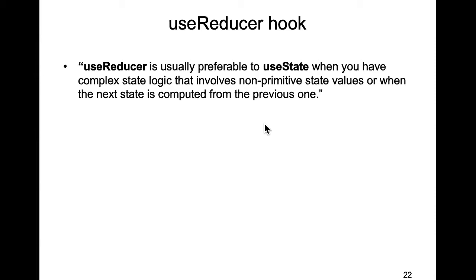But if your state, in terms of its data structure, is non-trivial, or more importantly, if the way the state changes is non-trivial, then you might consider using useReducer instead. I'm talking there about mutating the state — if the way a state is meant to mutate or change, if that actual change has to be computed in some way, then it might be a better idea to use useReducer rather than useState.